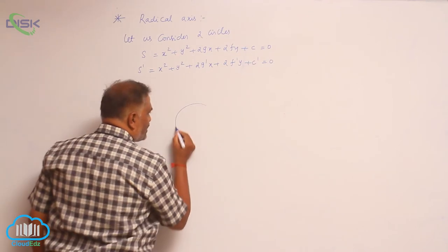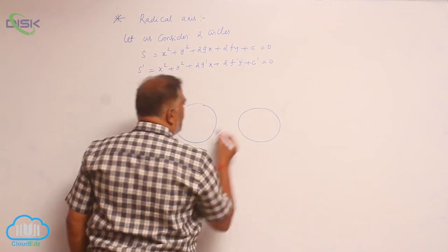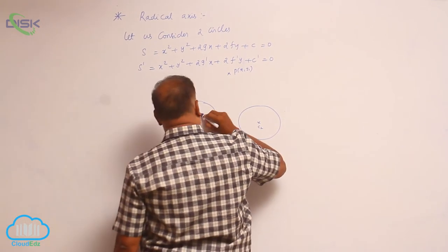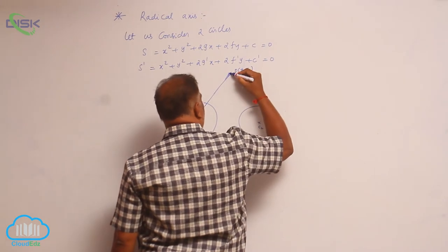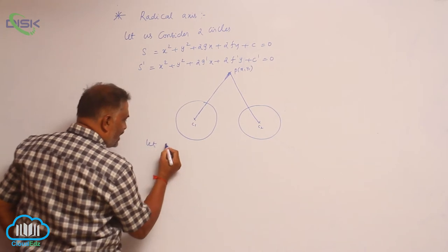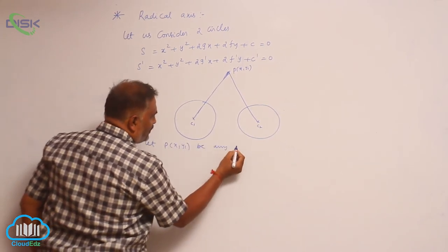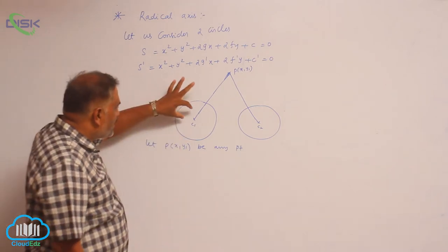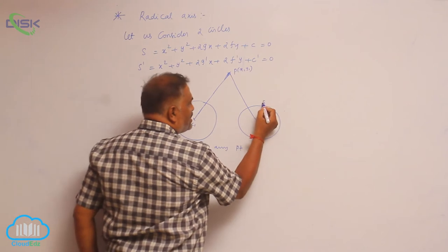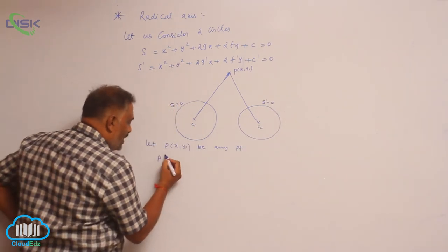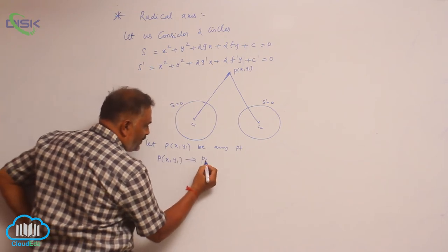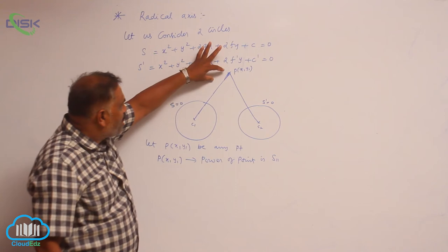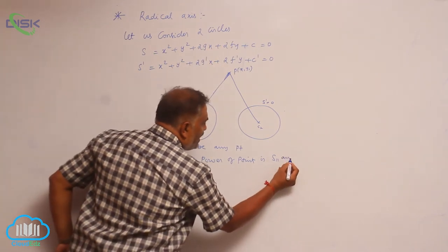Now, if you take two circles like this, let us consider a point P(x₁, y₁) outside. This is c1 and this is c2. You can join these two and join these two also. Now, if you calculate the power of the point P(x₁, y₁) with respect to the first circle S = 0 and the second circle S' = 0, the power of point P(x₁, y₁) is S₁₁, and for the second circle it is S'₁₁.